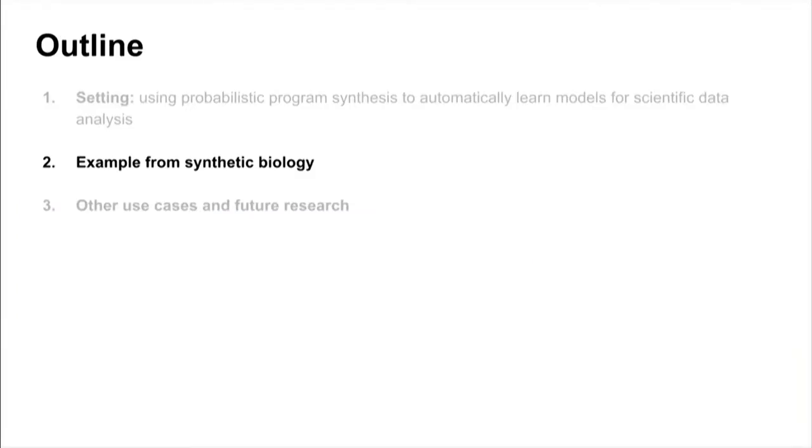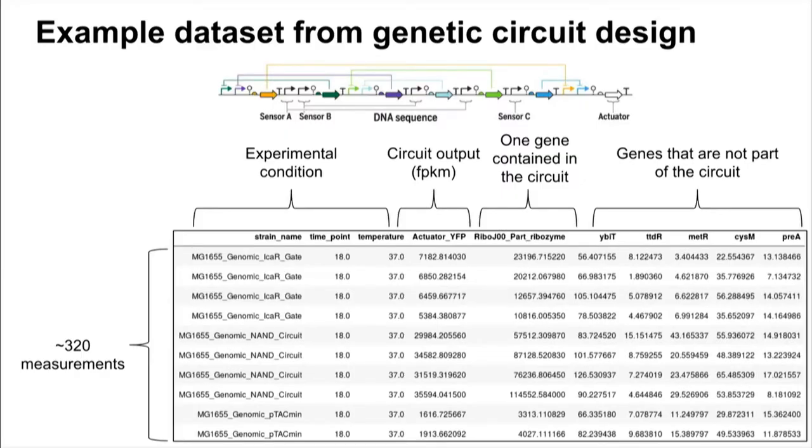I'm much more interested in actually making this practical, and therefore I would like to walk you through an example from synthetic biology. So what we see here is a data set from a collaborator of ours on genetic circuit design. So the idea is that you can basically engineer genes in a certain way so that an observable output, which we call actuator, which is a gene that generates yellow fluorescent protein, YFP, is either on or off. It has either high output and high read counts or low read counts. So the data we see here is RNA-seq data, and there are a few variables related to experimental conditions. There is the circuit output. There's genes that are parts of the circuit and other genes that are sequenced in the process of getting this data that have nothing to do with our engineered circuits. And in this case, we have some roughly 320 measurements.